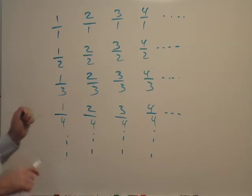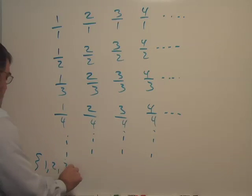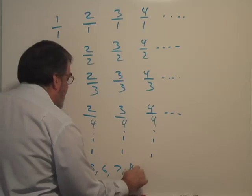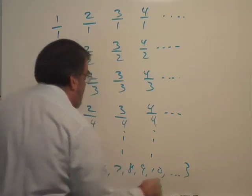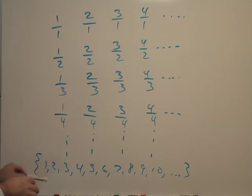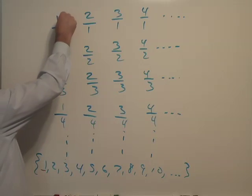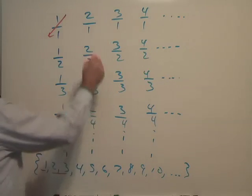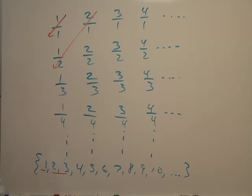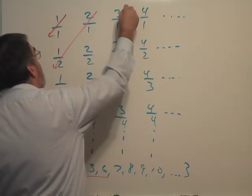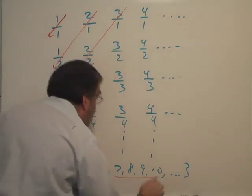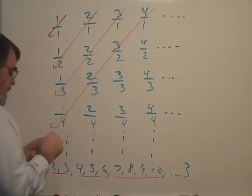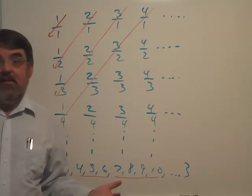Here was Cantor's idea. He said, let's take the counting numbers. I'm going to go up to 10 here: 1, 2, 3, 4, 5, 6, 7, 8, 9, 10, but they do go on indefinitely. Here's the scheme: I'm going to take this first number and match it with that upper left fraction. The next two numbers, 2 and 3, will match with these two fractions. 4, 5, 6 will pair up with these three fractions. And these four numbers will pair up with these four fractions. We can continue this pattern forever.